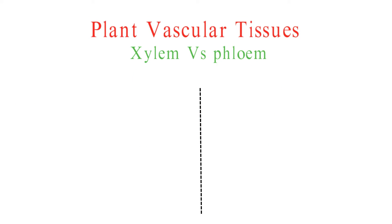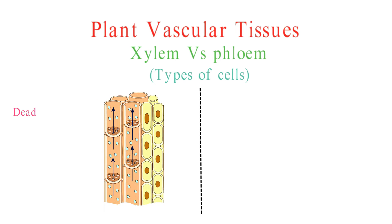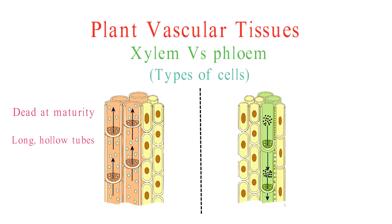One of the key differences between phloem and xylem lies in the types of cells they are composed of. Xylem cells are mostly dead at maturity, forming long, hollow tubes, while phloem cells are alive and actively involved in the transportation process.